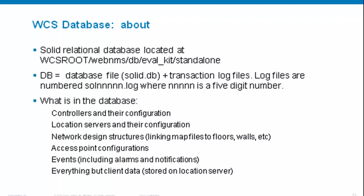What is in the database? You'll find the IP address and credentials for your controllers, controller configuration, location server information, network design such as map file relationships and floor information, wall thickness and customization, access point data, events including alarms and notifications, and basically anything else in WCS — except the client data that resides on a location server.